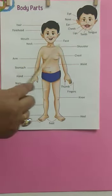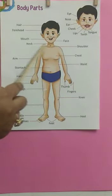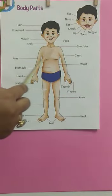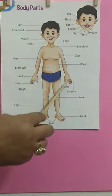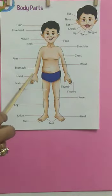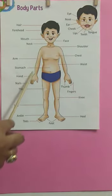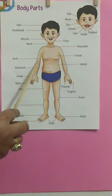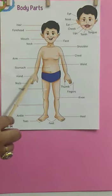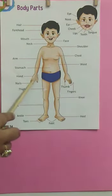These are two shoulders. We have two arms joined with our shoulders. Different parts of the arm are the elbow — here we have our elbows — then we have our wrist and we have our hand.